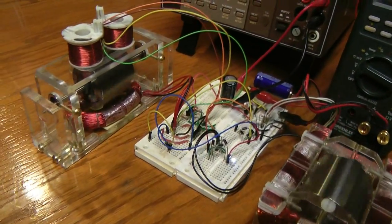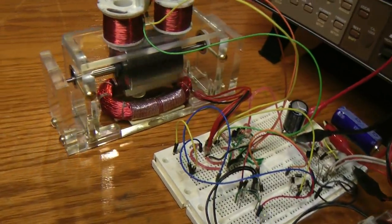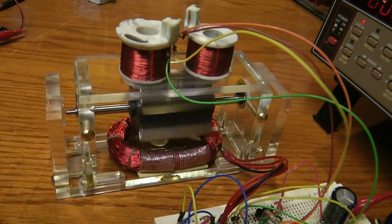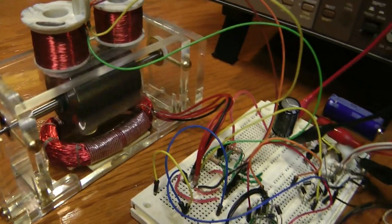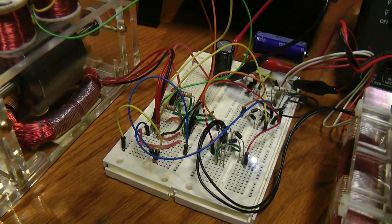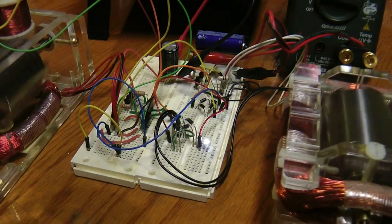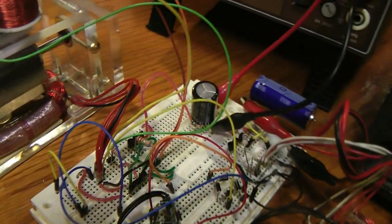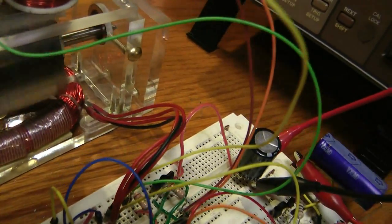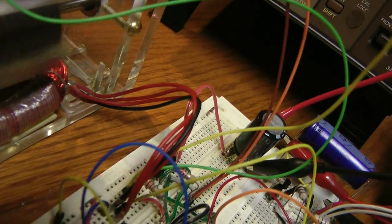Next up I put the 20 farad 2.7 volt capacitor back in there as the power supply. Moved the triggers away from each other a little bit to trim in, and it's running really nice. Both motors are running about the same speed. See the little capacitor down here on the left hand board.